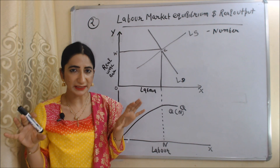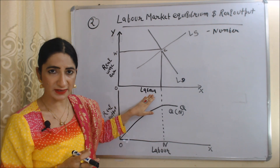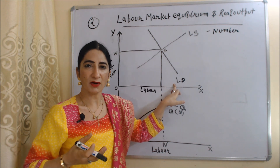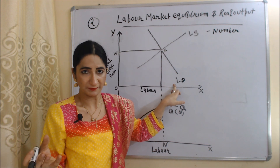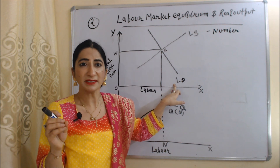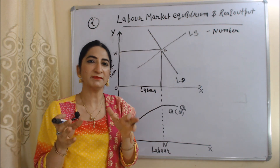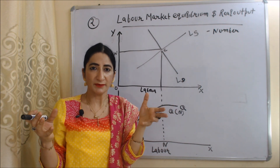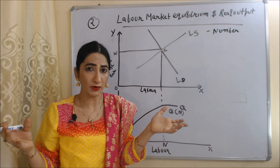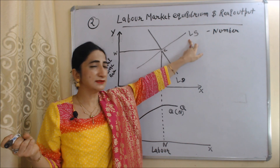Now we will see labor market equilibrium and real output with the help of a diagram. On the x-axis we have labor and on the y-axis we have real wage rates. LD is the labor demand curve — the amount of labor employers want to hire. Labor demand and wage rate have an inverse relation, so the slope of the labor demand curve is downward. At a higher wage rate, labor demand is less; at a lower wage rate, labor demand is more.